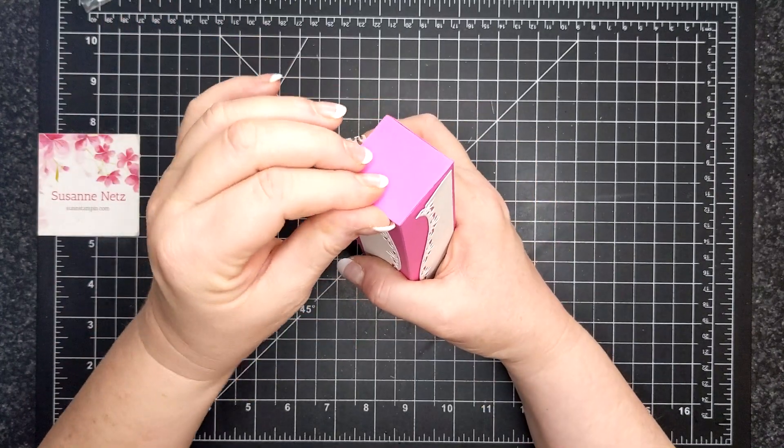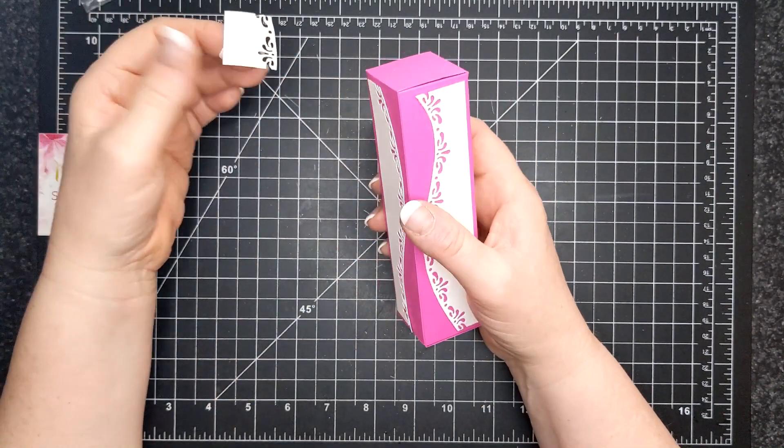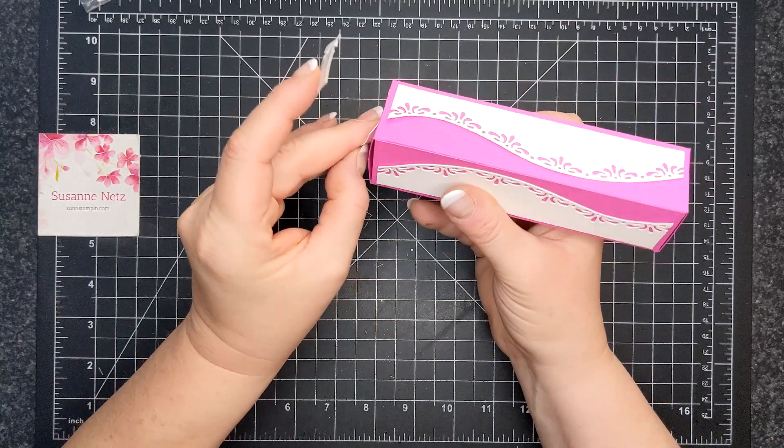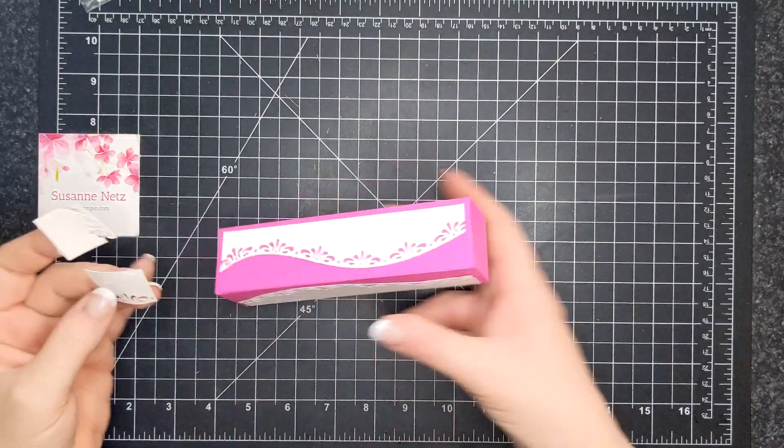I'm going to take these off and just leave the front. But regardless, if you wanted to cover this with regular designer series paper, you would need two pieces, 1.25 by 1.25. I'm going to take these off because I like them without. I changed my mind. I'm a girl. I'm allowed.